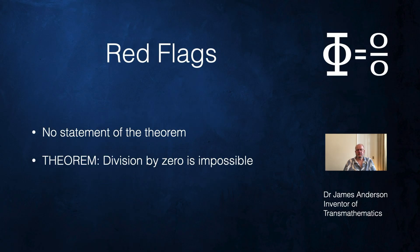Red flags are warnings of danger. The first kind of warning is that these proofs don't usually have a statement of the theorem. They don't say I'm about to prove that division by zero is impossible. What they do is they start off somewhere, go through a whole bunch of manipulations, and then say therefore division by zero is impossible.